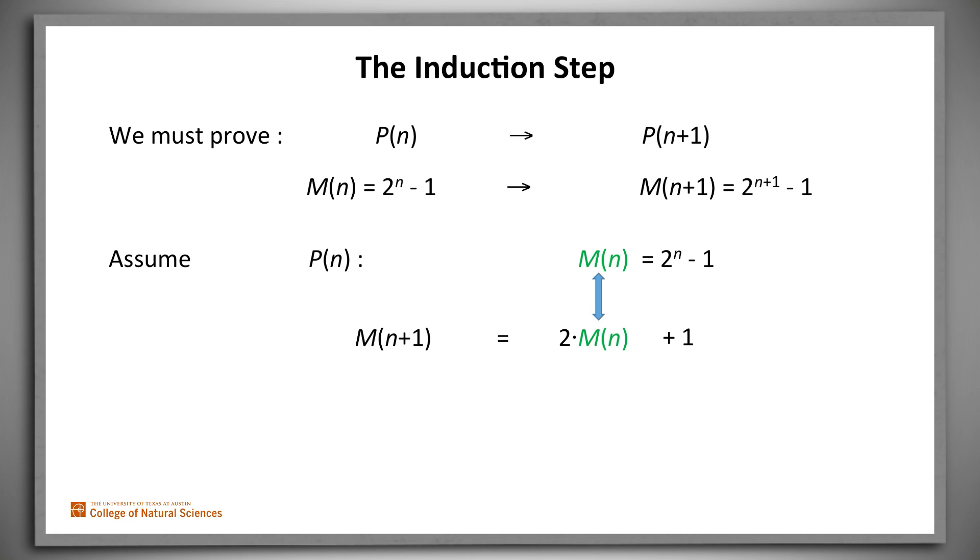From the induction hypothesis, we know what m of n is. It's 2 to the n minus 1. So we substitute that into our expression, then we just do a bit of algebra. Multiply out the 2. 2 times 2 to the n is 2 to the n plus 1. And minus 2 plus 1 is minus 1.